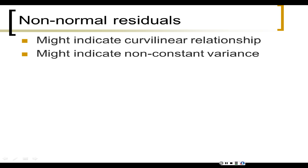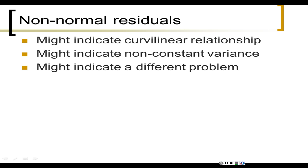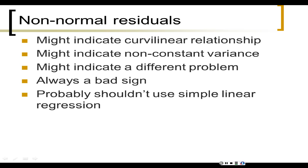Non-normal residuals might indicate a curvilinear relationship, non-constant variance, or a number of other problems. Either way they're a bad sign, and you probably should not use the regression we learn in this class if you're getting seriously non-normal residuals. If you have to ask whether it's normal enough, it's probably okay in practice. But when it's really non-normal — crazy skew in one direction, something that looks more like a chi-square distribution, a long-tail ski-slope distribution — then you have a big problem.